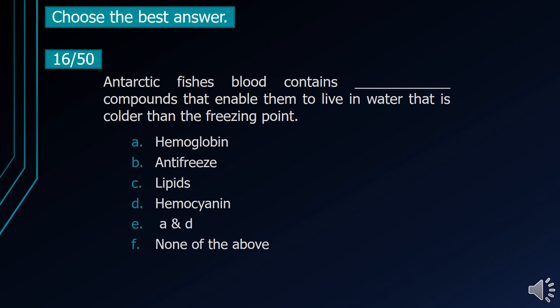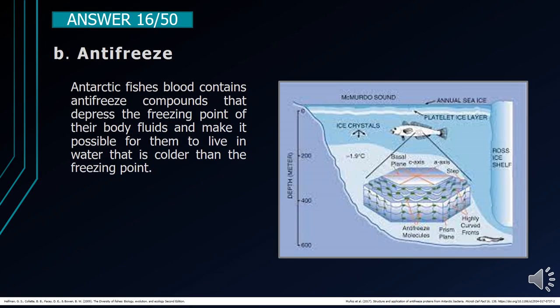Number 16. Antarctic fish blood contains blank compounds that enable them to live in water that is colder than the freezing point. A. Hemoglobin. B. Antifreeze. C. Lipids. D. Hemocyanin. E. A and D. F. None of the above. The correct answer is letter B, Antifreeze. Antarctic fish blood contains antifreeze compounds that depress the freezing point of their body fluids and make it possible for them to live in water that is colder than the freezing point.